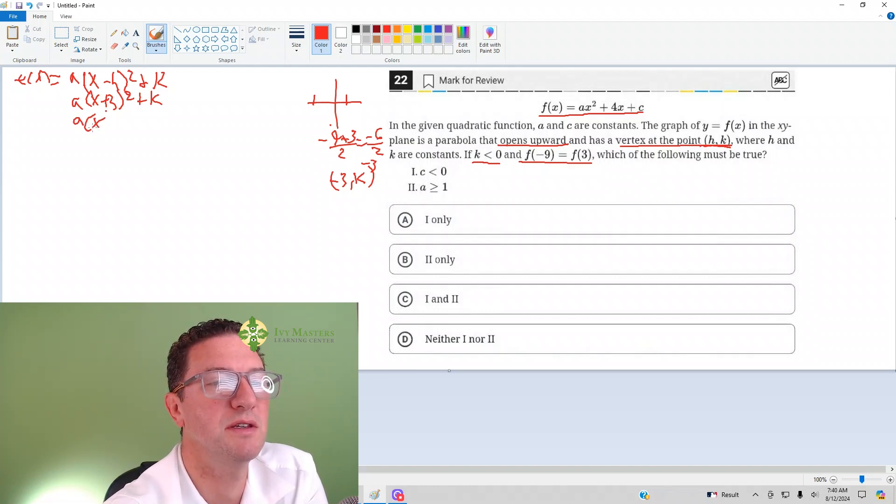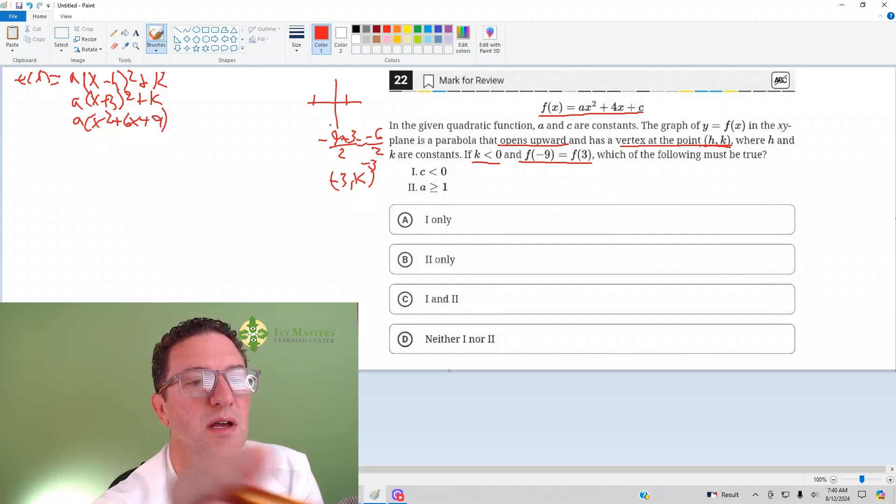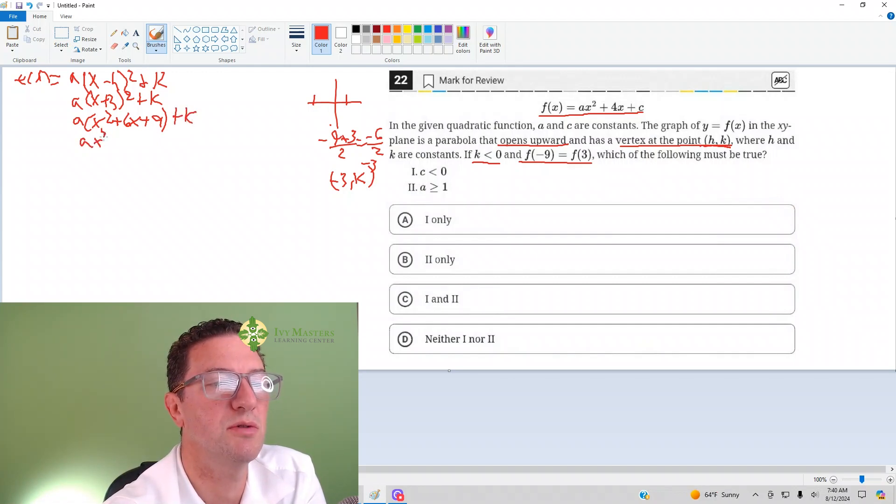This is going to give you x² + 6x + 9. You do not distribute the 2 there; it's (x + 3) times (x + 3), and then you FOIL, plus k. Distribute the a: ax² + 6ax + 9a + k.